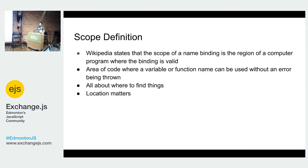So the definition of scope. Wikipedia defines scope as the region of a computer program where the binding is valid. That's a bit opaque. One I prefer is that scope is an area of code where a variable or function name can be used without an error being thrown. The important thing to remember about scope is that it's all about where to find things in your code. Location matters.